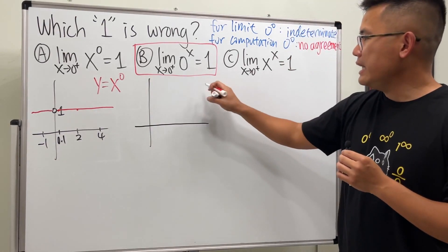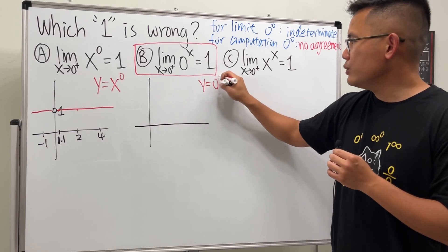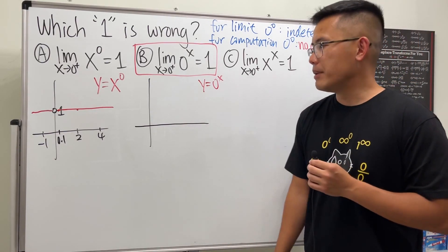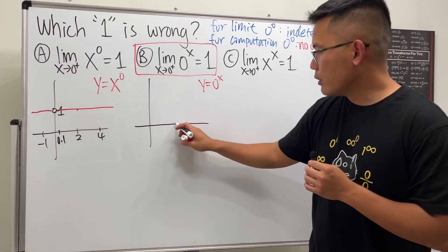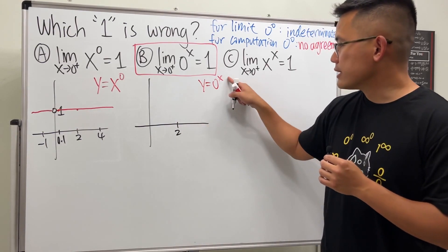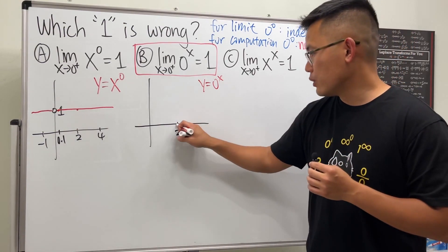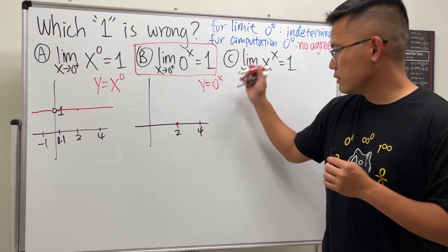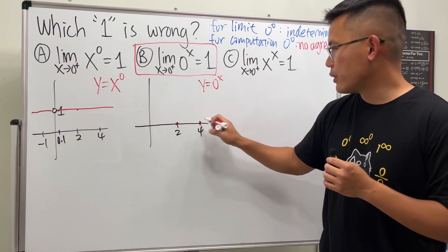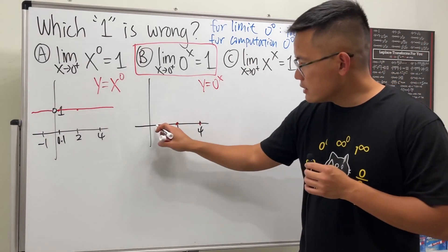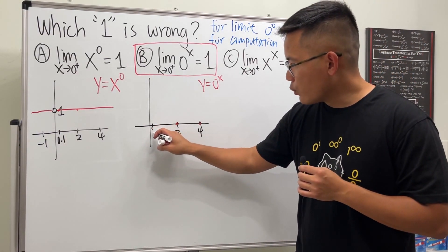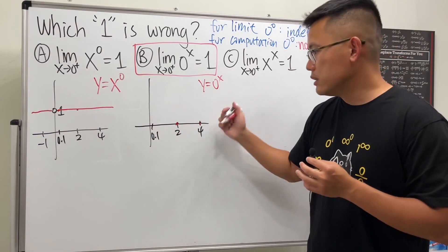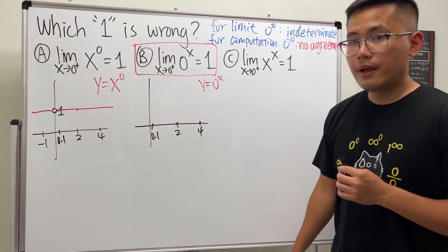For the second limit, let's graph y = 0^x. If x = 2, then 0^2 = 0; if x = 4, then 0^4 = 0; if x = 0.1, then 0^0.1 = 0.